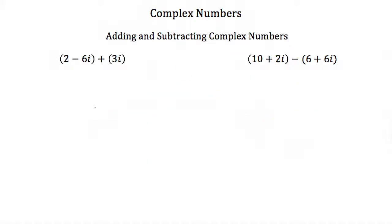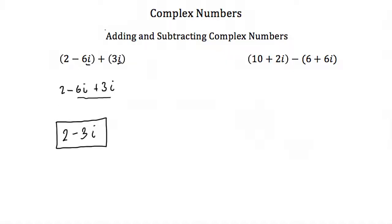Since complex numbers have both a real and an imaginary part, how do we add and subtract them? Well we do this by adding and subtracting the real parts and then adding and subtracting the imaginary parts. Another way to think of this is just pretend that i is a variable. So if I had 2 minus 6i plus 3i, I would just add my like terms — the terms with the i in them. So this would become 2 minus 3i.